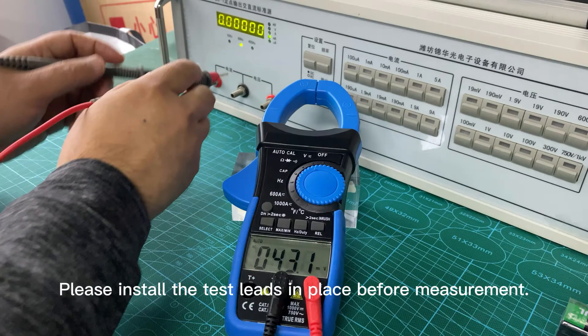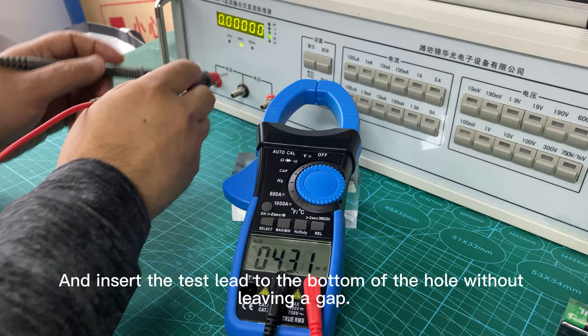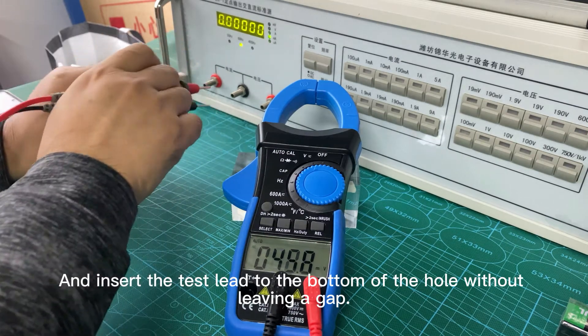Please install the test leads before measurement. Connect the black test lead to the T-COM socket and red test lead to the T-plus V-omega-Hz socket, and insert the test leads to the bottom of the holes without leaving a gap.